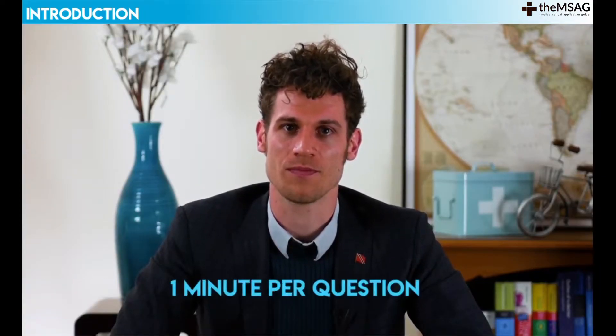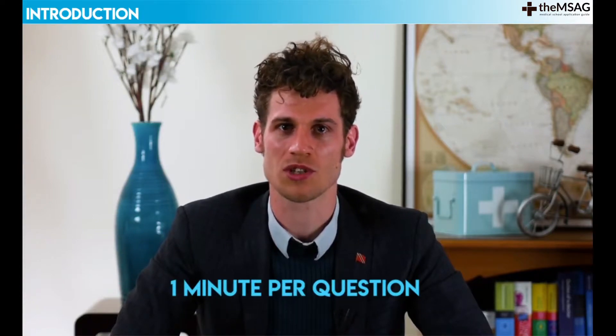The decision-making subtest of the UKCAT has 29 questions to be answered in 31 minutes. This works out nicely at just over a minute per question. How long you spend on each question will vary widely by question type.